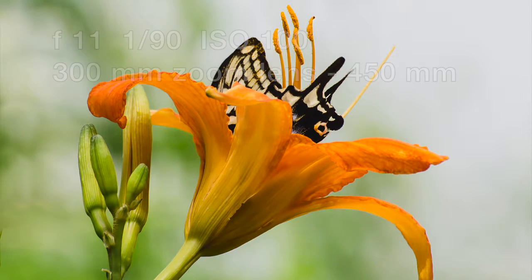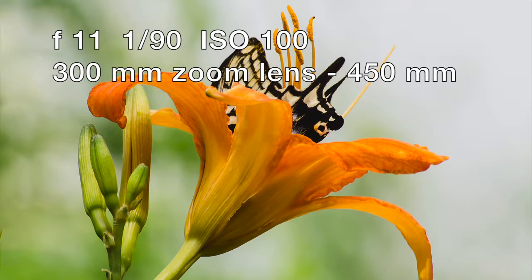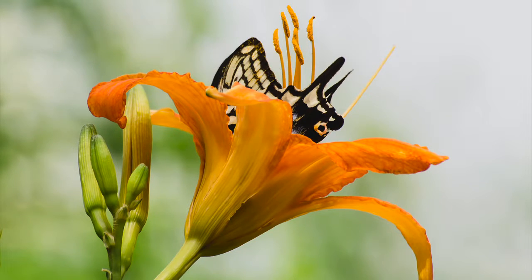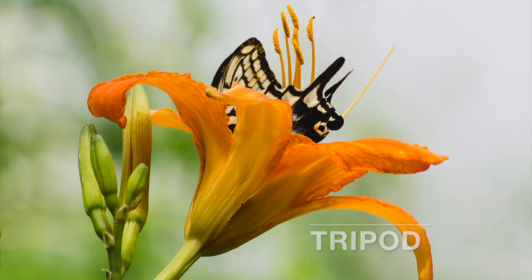This is a 70-300 telephoto lens at 300mm, so on my camera it's 450mm. I'm staying back from the butterfly so I don't scare it away. Because I'm 10 feet away, I can get more in focus now. f11 is my sharpest aperture, and it's perfect for capturing the daylily and the butterfly. And the background is blurred just the way I wanted.